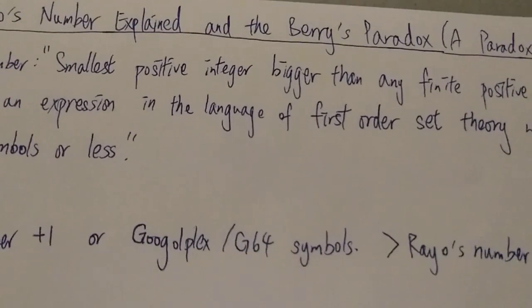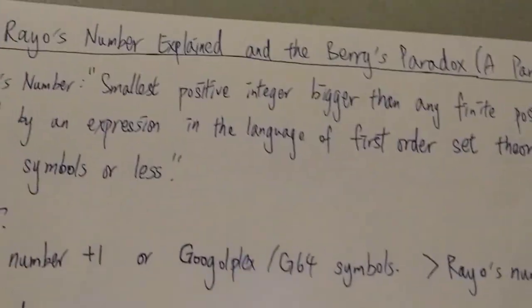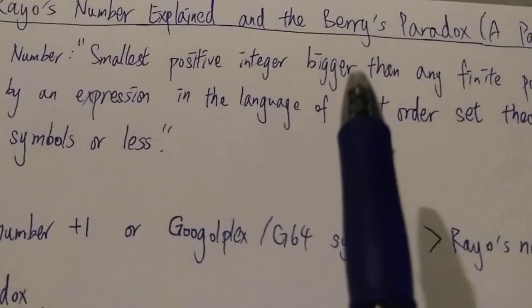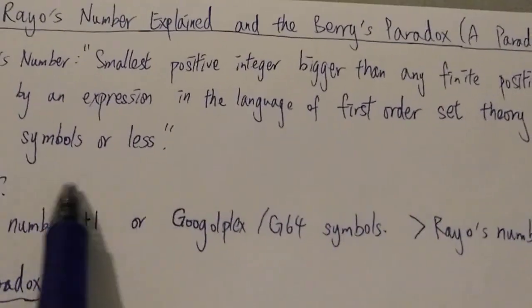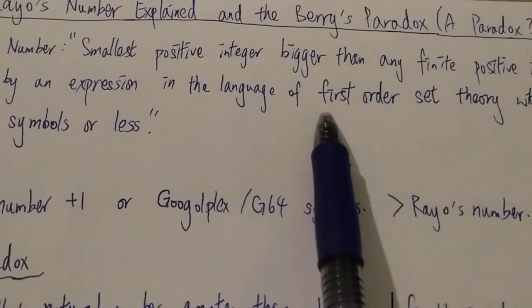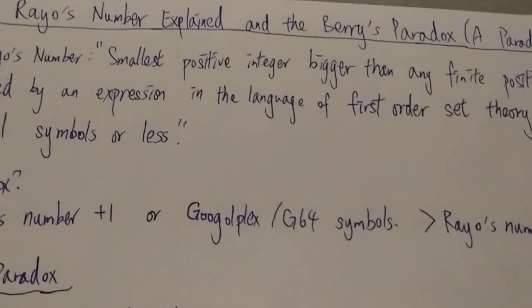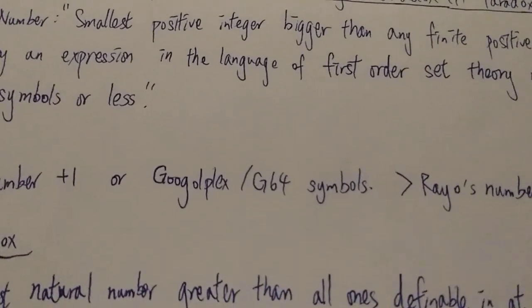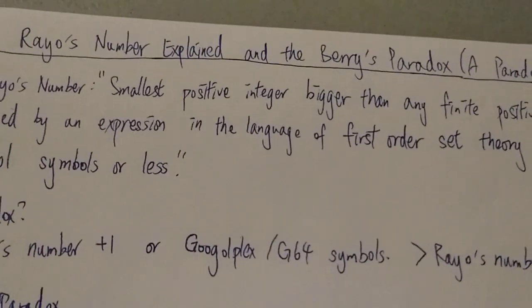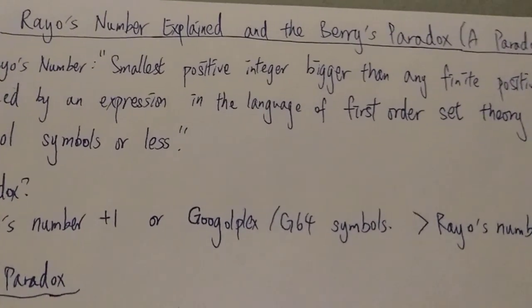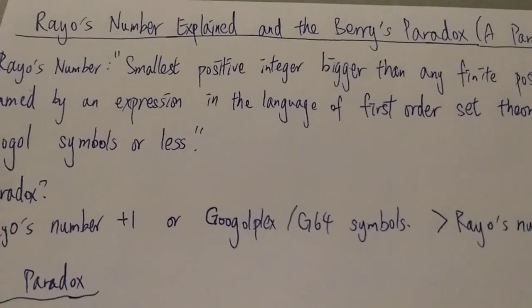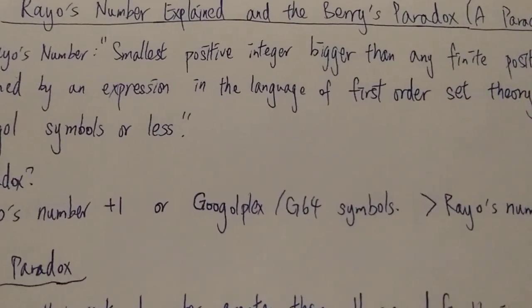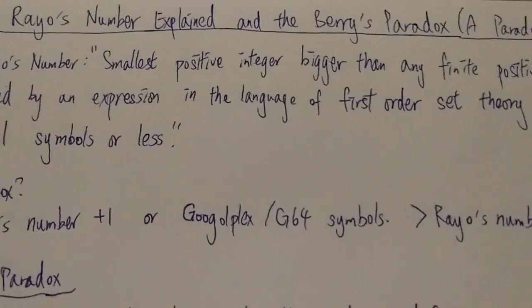So in other words, Rayo's number is not actually definable using the English language. It uses symbols in the first-order set theory. So this is not a contradiction or a paradox. So hopefully this will help you understand Rayo's number a little bit more. And thanks for watching and have a nice day.